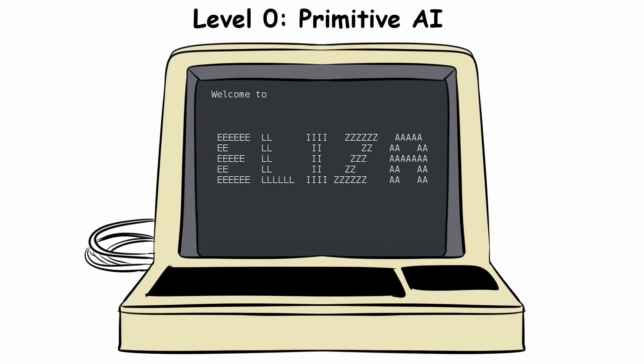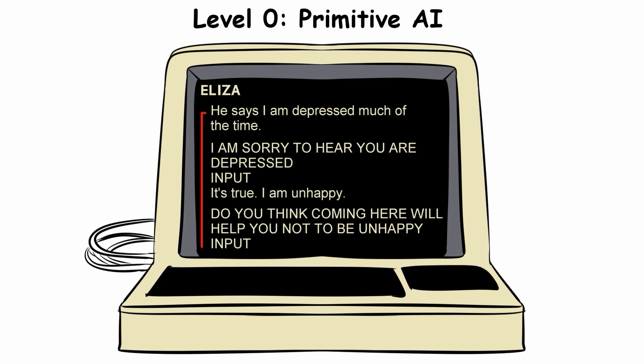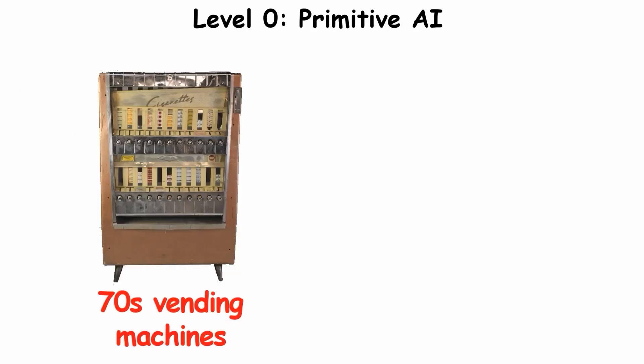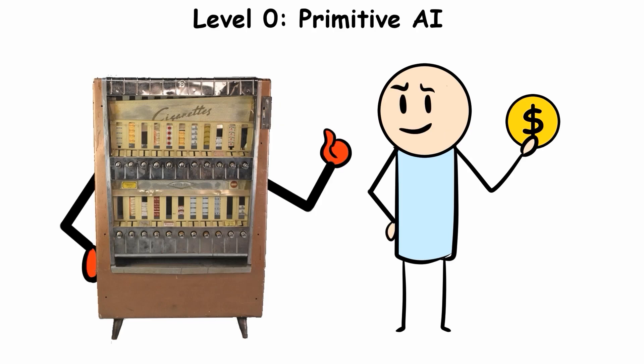In the 1960s came Eliza, a chatbot that simulated a psychotherapist by rephrasing statements as questions without any understanding of human emotions. Tell it I'm sad and it responds, why are you sad? A clever conversational trick masking complete ignorance. Even those 70s vending machines that could detect coins were just measuring weight and size against fixed parameters, so a foreign coin with matching dimensions could fool it completely.